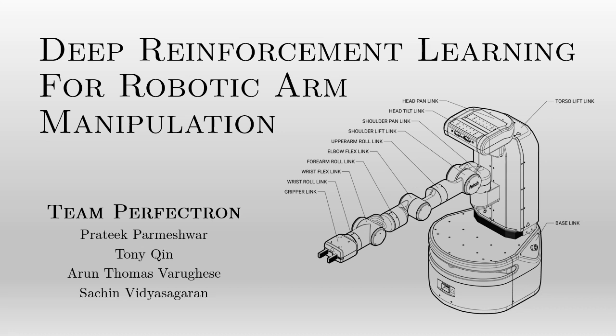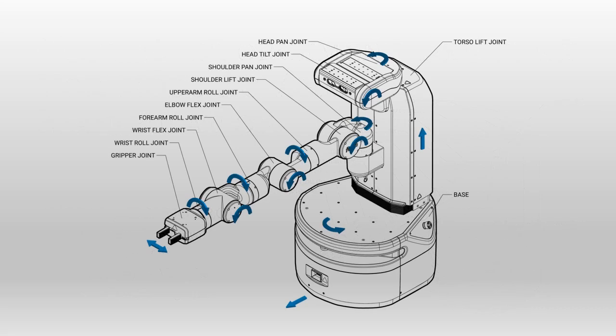Hello everyone, we are Team Perfectron and this is our project on deep reinforcement learning for robotic arm manipulation. Robotic arms have different actuators which can move to certain degrees in order to move an end effector to a desired position in space.